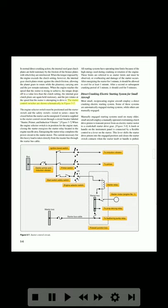The starter control switches are shown schematically in Figure 5-7. The engine selector switch must be positioned and the starter switch and the safety switch, wired in series, must be closed before the starter can be energized. Current is supplied to the starter control circuit through a circuit breaker labeled Starter, Primer, and Induction Vibrator. When the engine selector switch is in position for the engine start, closing the starter switch energizes the starter relay located in the engine nacelle area. Energizing the starter relay completes the power circuit to the starter motor. The current necessary for this heavy load is taken directly from the master bus through the starter bus cable. All starting systems have operating time limits because of the high energy use during cranking. After energizing the starter for one minute, it should be allowed to cool for at least one minute. After a second or subsequent cranking period of one minute, it should cool for five minutes.